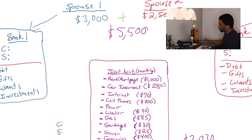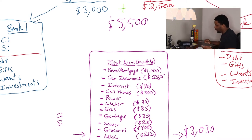Spouse one and spouse two make $5,500 a month. So now it's up to this couple to figure out how they're going to go from $5,500 and budget that so that it fits a $3,030 budget. The person who actually showed me this budgeting system said that her husband is actually more financially responsible, so he is actually managing this.